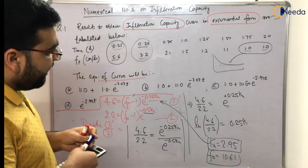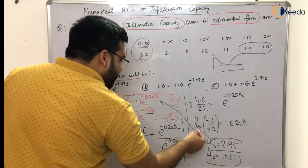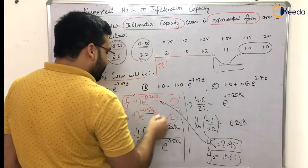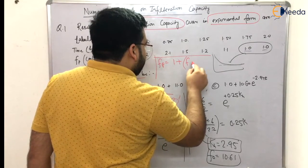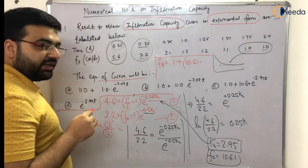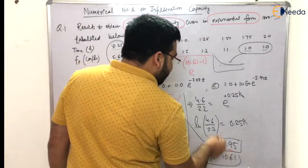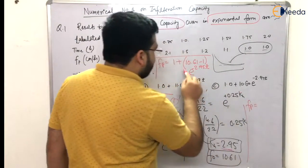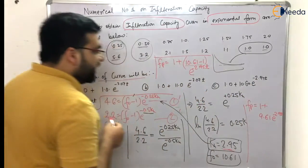Now we know F0 = 10.61, KH = 2.95, and FC = 1.0. The final Horton's equation is: FP = 1.0 + (10.61 − 1) × e^(−2.95T) = 1.0 + 9.61 × e^(−2.95T). Checking the options, the answer that matches is 1.0 + 9.61 × e^(−2.95T).